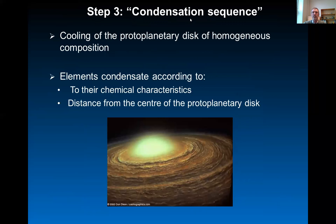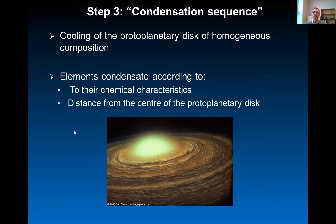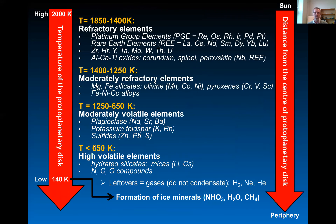The third step is the condensation sequence. That means that all the atoms will eventually form more complex compounds, and that happens when the temperature of the proto-planetary disk drops. It drops from the center to the edge of the disk, and then the elements start forming compounds according to their chemical characteristics and according to the distance from the center to the edge of the disk. This condensation sequence goes from above 2000 kelvins down to 140 kelvins.